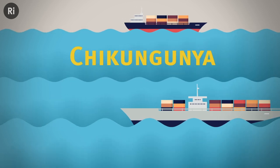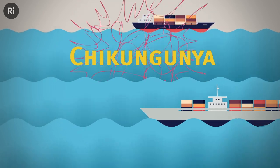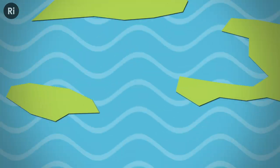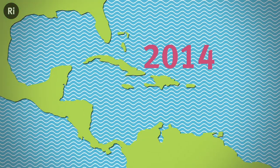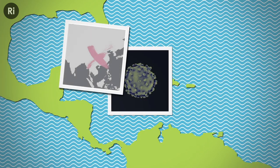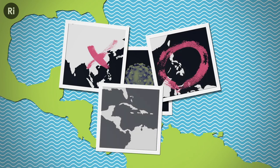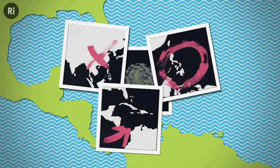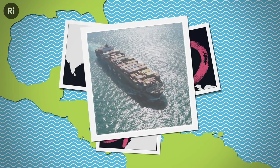Chikungunya is a viral disease that causes fever and severe joint pain. Chikungunya arrived in the Caribbean in 2014, and research on the genetics of the virus showed it had traveled from China, through the Philippines and Micronesia, and into the Caribbean—presumably through the Panama Canal—the same route shipping trade takes.